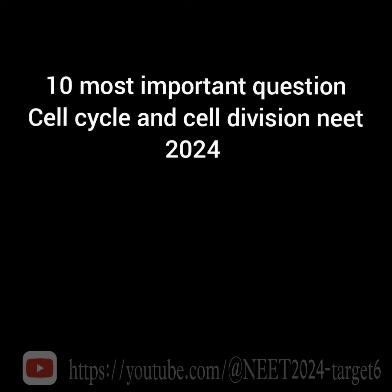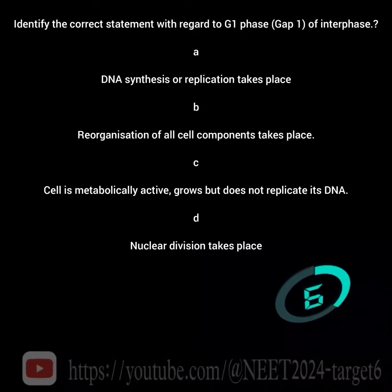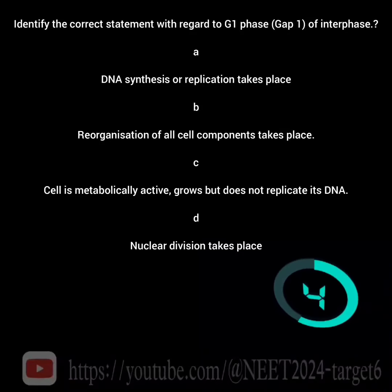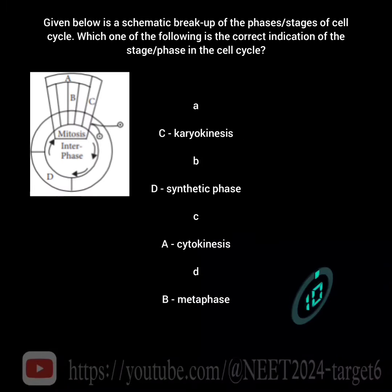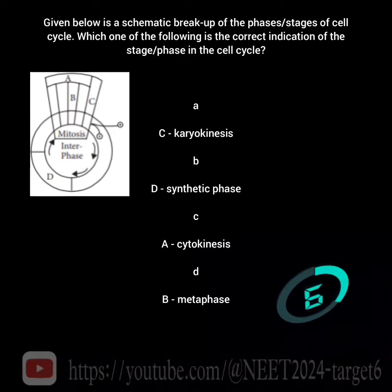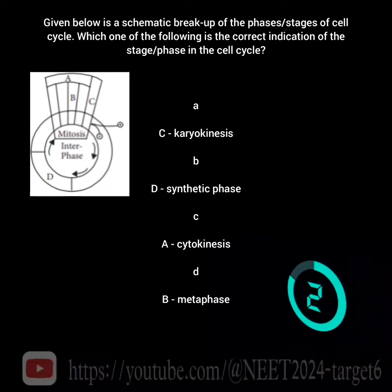Important questions for NEET 2024: Identify the correct statement with regard to G1 phase, Gap 1 of interphase. Given below is a schematic breakup of the phases and stages of the cell cycle — which one of the following is the correct indication of the stage or phase in the cell cycle?